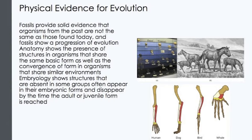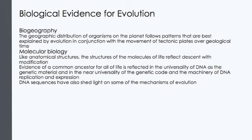Comparing early stages of development in different animal species reveals additional homologies not visible in adult organisms. This is called comparative embryology. For example, all vertebrate embryos have a developmental stage in which structures called pharyngeal pouches appear on the sides of the throat. At this stage, the embryos of fishes, frogs, snakes, birds, and apes — indeed all vertebrates — look more alike than different. The different classes of vertebrates take on more distinct features as development progresses. For example, pharyngeal pouches develop into gills in fishes, but into parts of the ear and throat in humans.